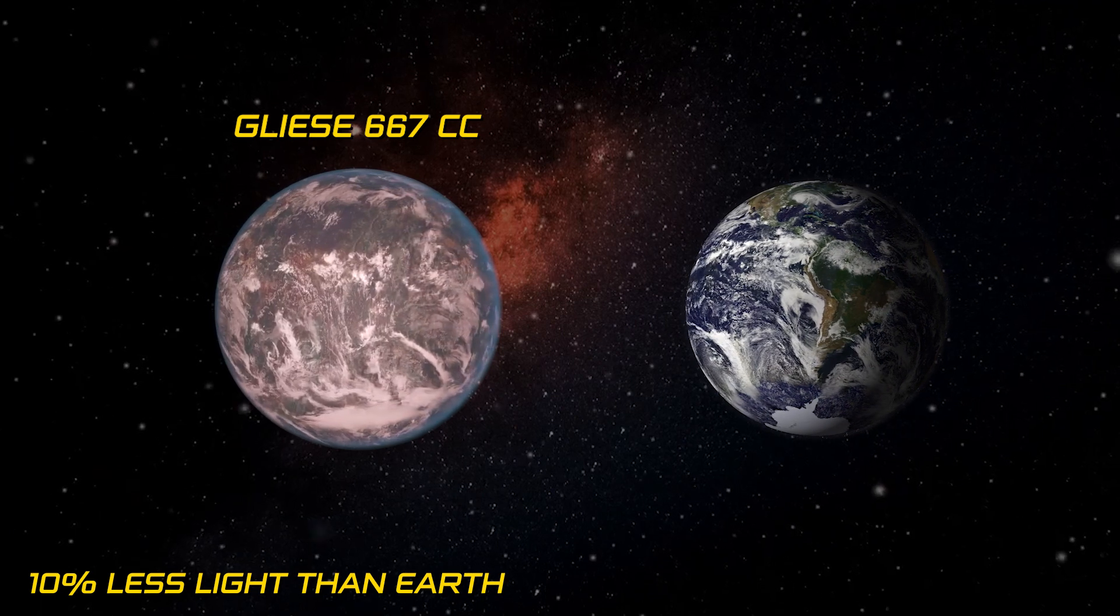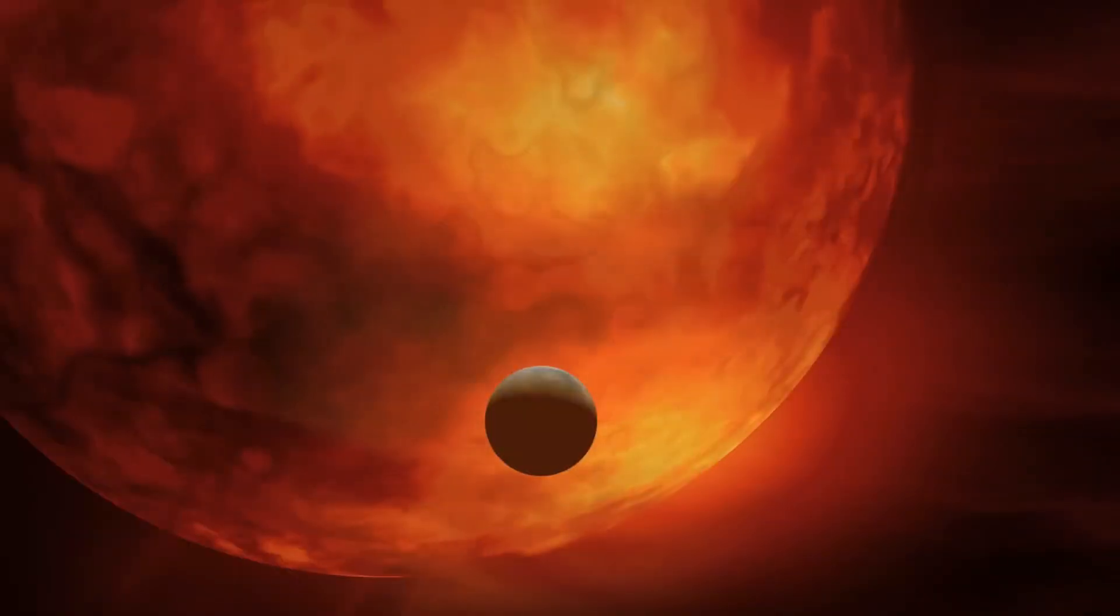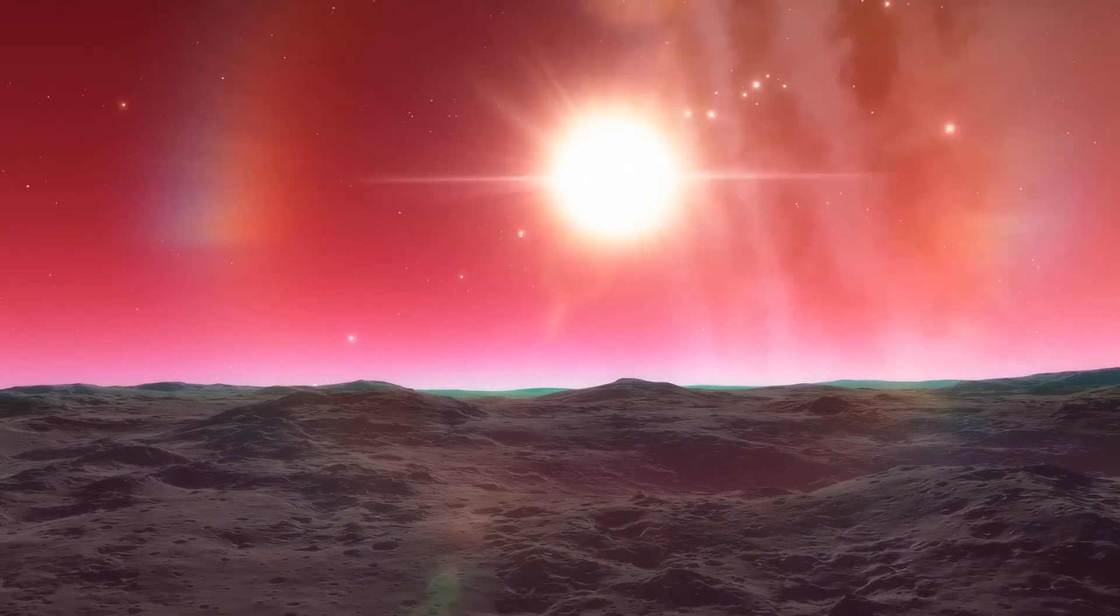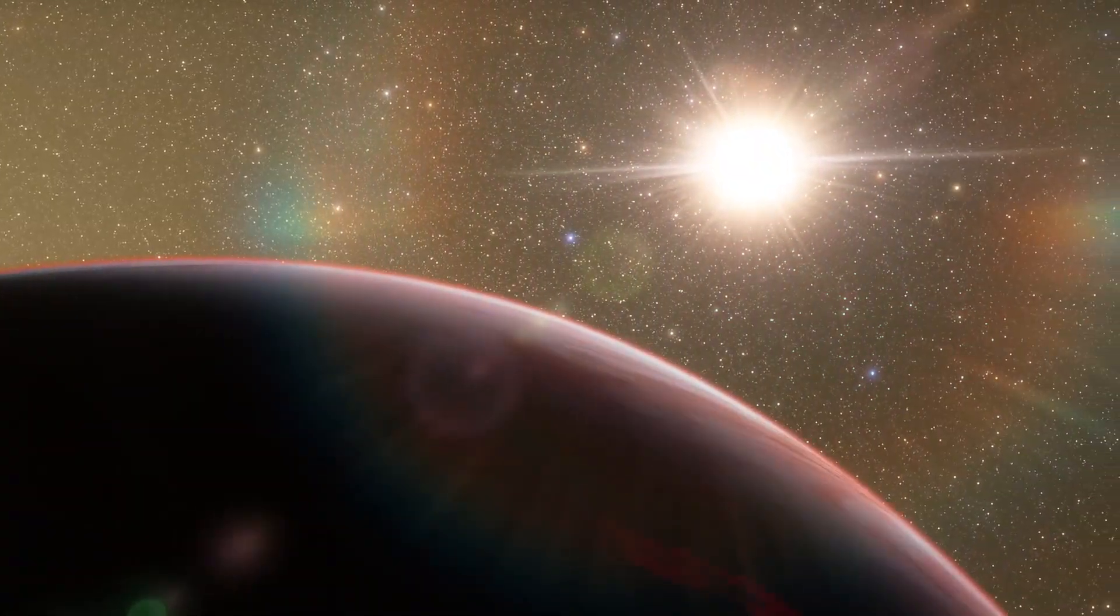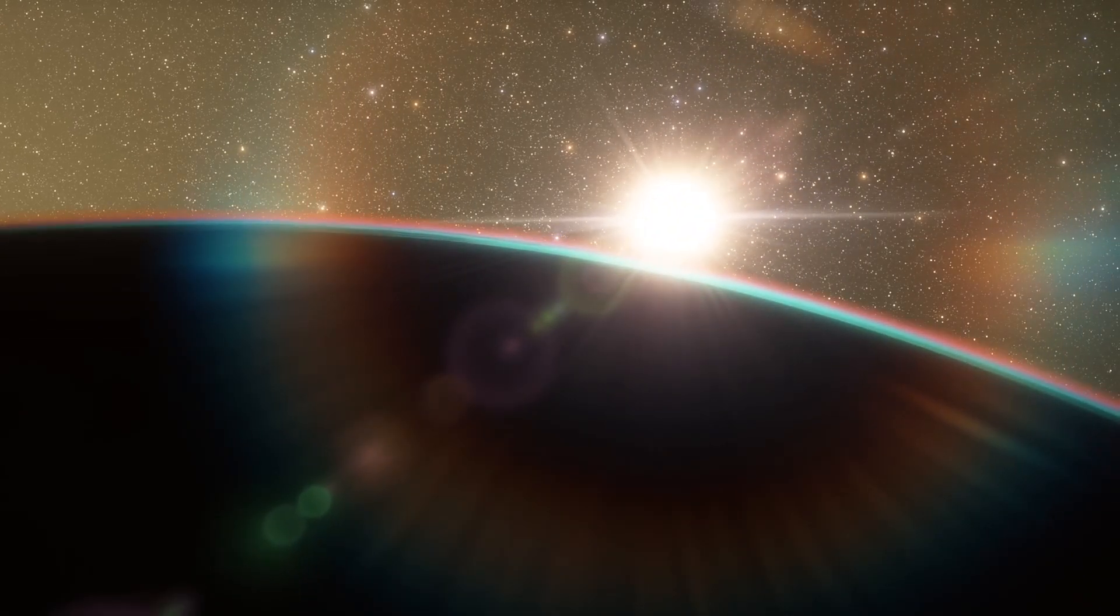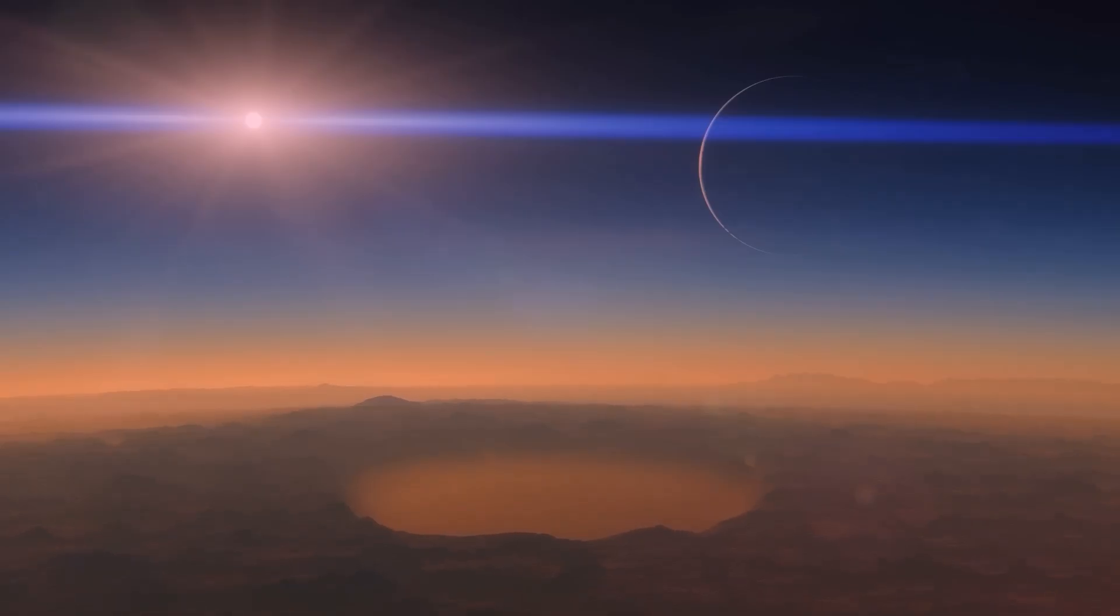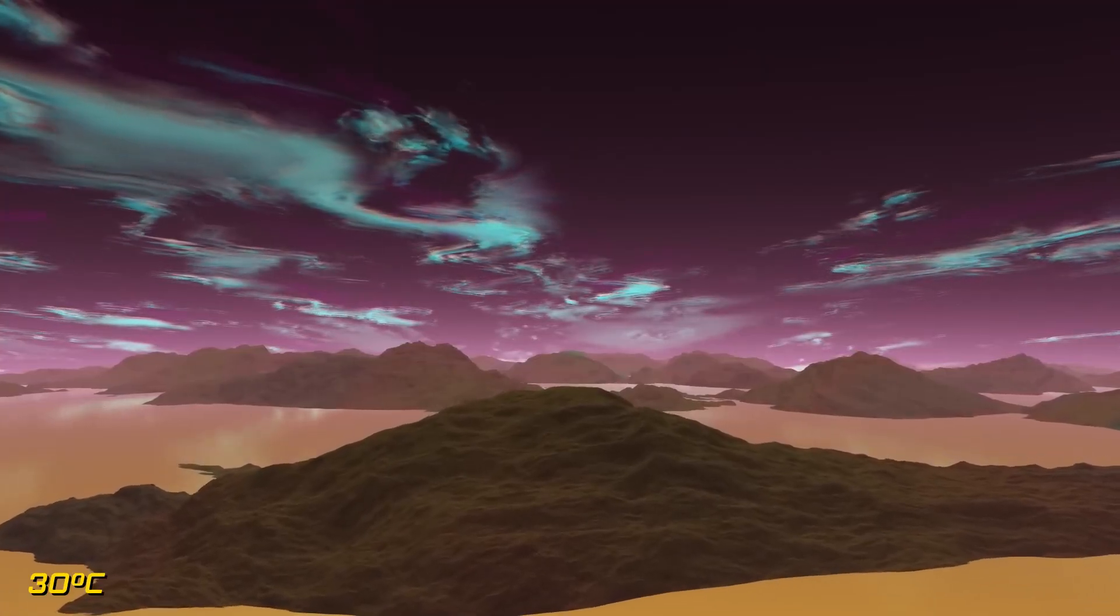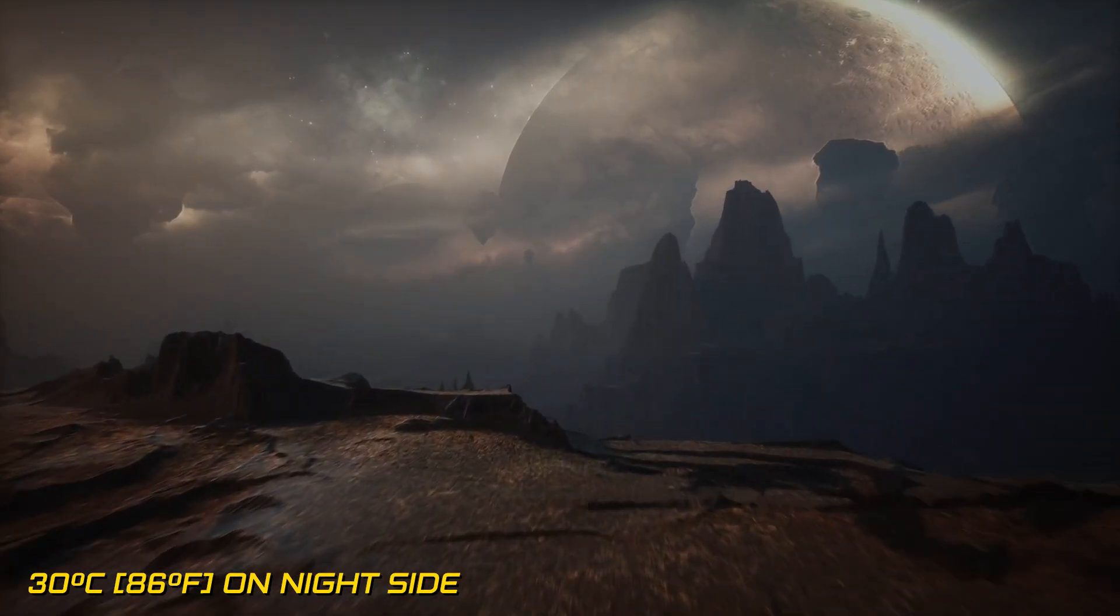Despite receiving about 10% less light than Earth, most of what Gliese 667-CC receives is in the form of infrared radiation, akin to a warm hug from the Sun. This infrared bounty aids in water retention, potentially fostering a climate akin to our own. However, the mysteries don't end there. Without concrete knowledge of its atmosphere's composition and thickness, predicting Gliese 667-CC's exact surface temperature remains elusive. Should it boast an Earth-like atmosphere, temperatures could hover around a pleasant 30 degrees Celsius, or 86 Fahrenheit on the nightside, offering an entirely unique living experience.